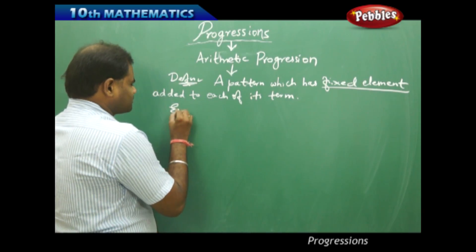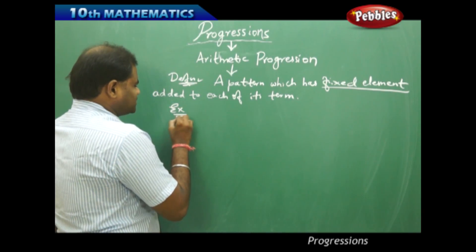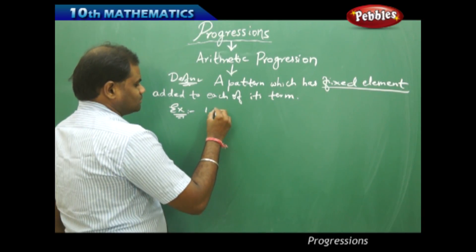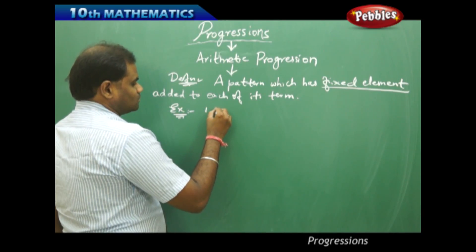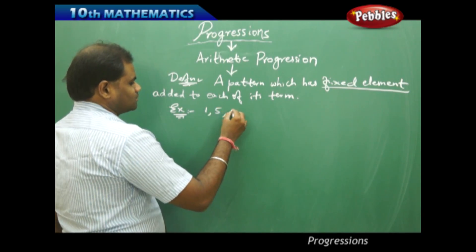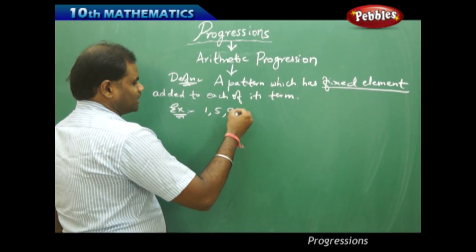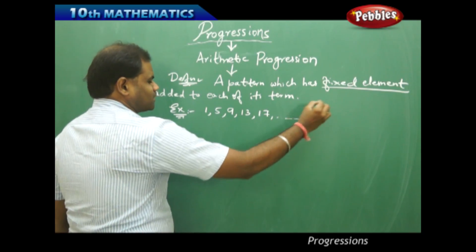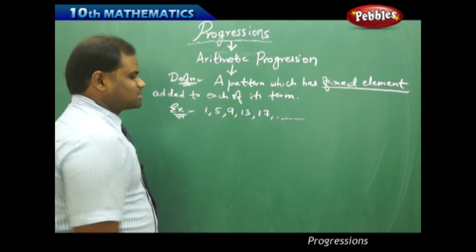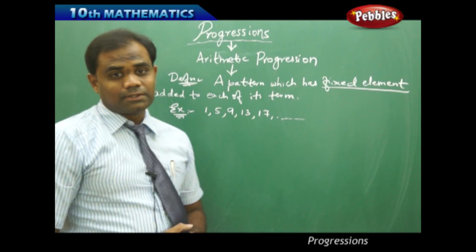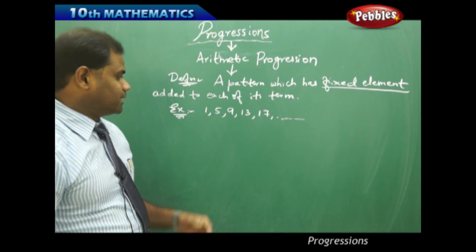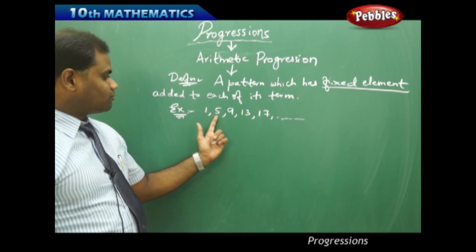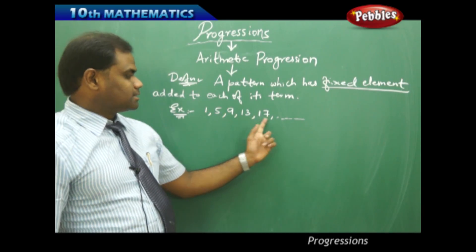For example, take the pattern 1, 5, 9, 13, 17, and so on. This example has been discussed before, but let's revisit it. In this case, what is the fixed element which is added?